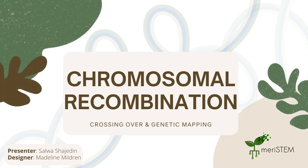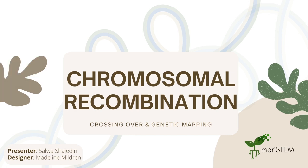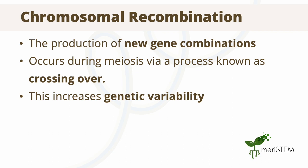Our genetic system has an interesting way of doing a mix and match to produce new combinations. This is known as chromosomal recombination, which refers to the process of recombining genes to produce new gene combinations. Recombination of chromosomes happens during a process within meiosis called crossing over, when chromosomes exchange genetic material with one another to produce different combinations.